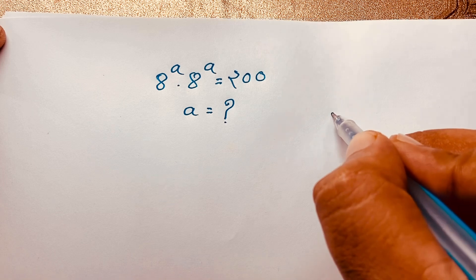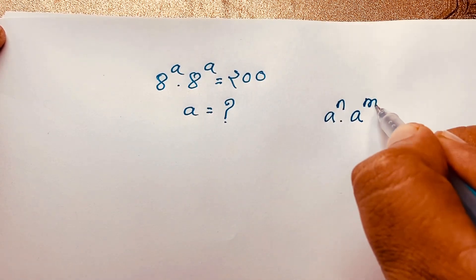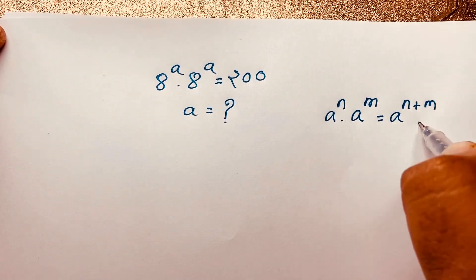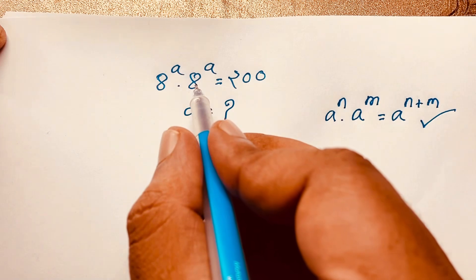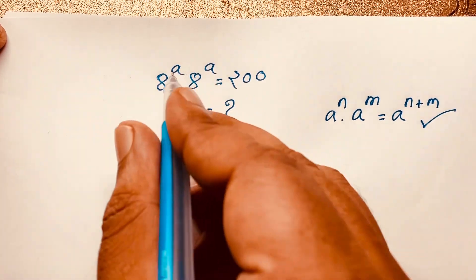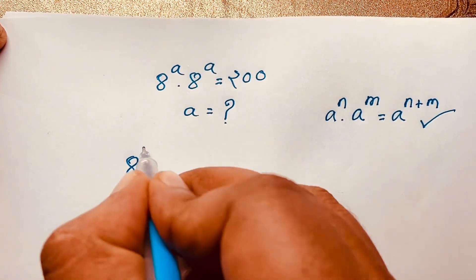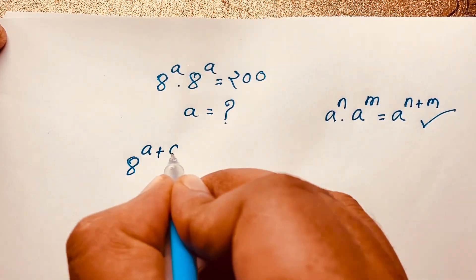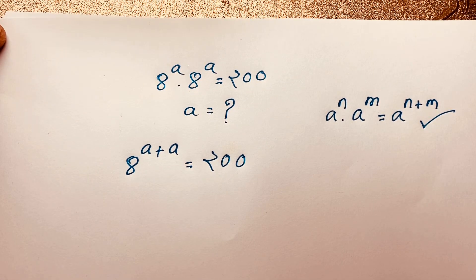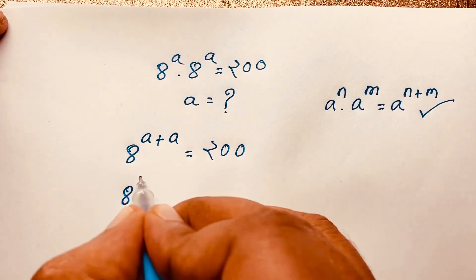First of all, we know the exponential law: a^n times a^m equals a^(n+m). According to this law, the exponent here is a + a, which equals 2a. So 8^(a+a) is equal to 200, following this exponential formula.